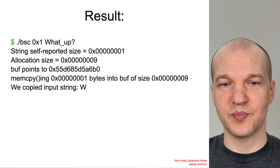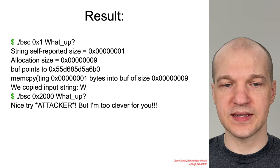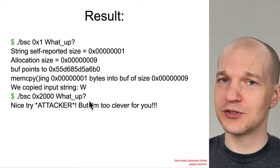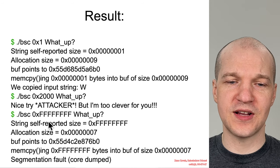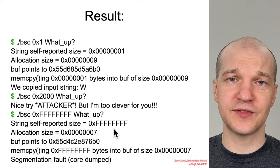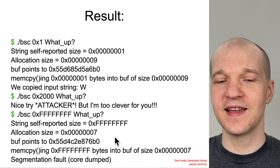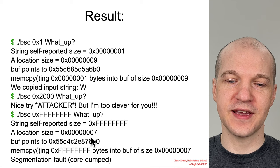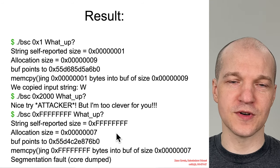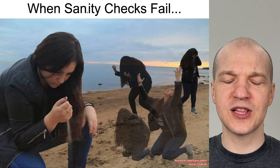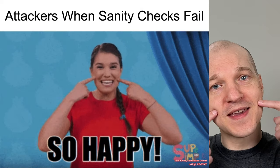It's all good for low values, but 2000 — sure, it looks like it's working. But if the attacker provides all Fs, then they will successfully bypass the insanity check, and they will successfully integer overflow and lead to an underallocation over-copy. And again, the developer says why? And the attacker is super happy.